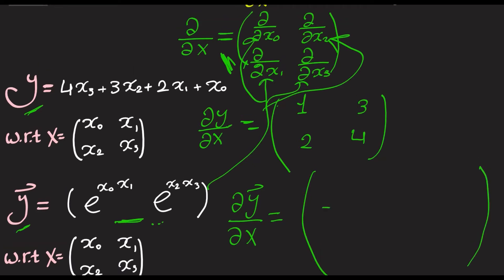So, 1, 2, 3, 4. I can change the color. So, here, differentiate the vector with respect to x0. So, we'll have x1, e to the power of x0 x1, and 0. Here, differentiate with respect to x2. So, here, 0, and here, x3, e to the power of x2 x3.